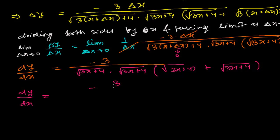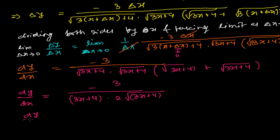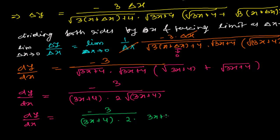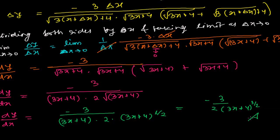Since √(3x+4) + √(3x+4) = 2√(3x+4), we get dy/dx = −3 over [2(3x+4)^(1/2) · (3x+4)]. Combining powers: dy/dx = −3 over 2(3x+4)^(3/2). This is the final answer.